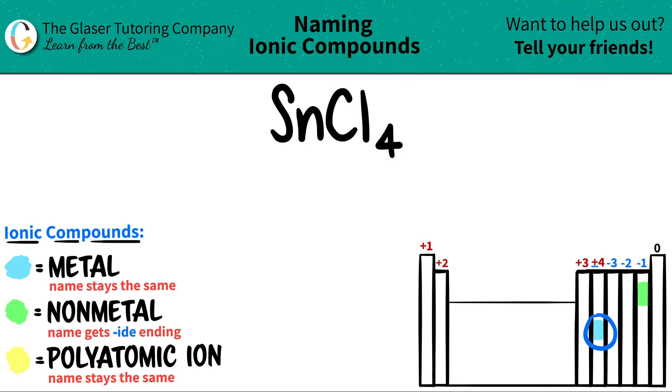So that's why we have a metal and a nonmetal. Tin is the metal and chlorine is the nonmetal. Now let's write out the name. The metal name always stays exactly the same. So since Sn is tin, I'm just going to write tin.